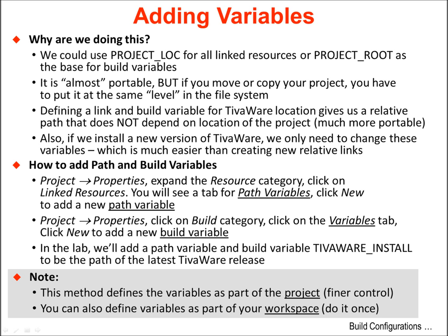Using PROJECT_LOC or project root to link to resources creates an almost portable project since the links are relative to these locations, but if you move or copy your project you will have to put them at the same folder level in your file system. Defining a link and build variable for the TivaWare location gives a relative path that does not depend on the location of the project — this is more portable. Also, when the next version of TivaWare arrives, you only need to change this one variable. On the CCS menu bar under Project Properties, expand the Resource category and click on Linked Resources to see a tab for path variables. Click New to add your new path variable. In Properties, click on the Build Category and then the Variables tab, then click New to add a new build variable. In the lab, we will add a path and build variable called TivaWare_Install that will point to the latest TivaWare release. Note that you can define variables to be part of your project or part of your workspace to apply to all projects within it.